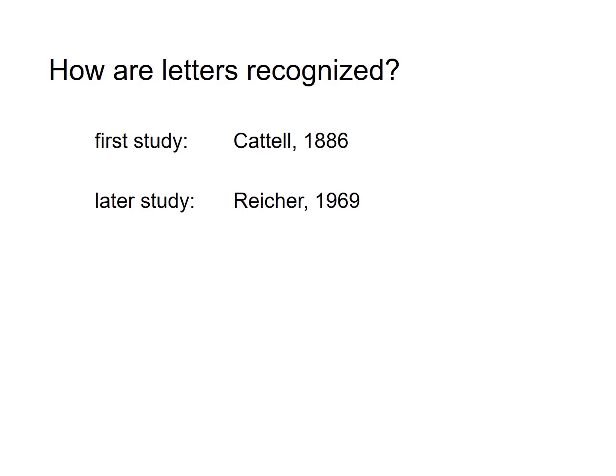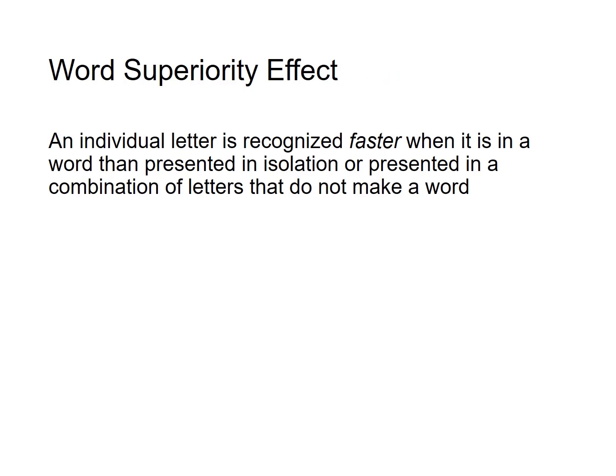Research on how letters are recognized visually is one of the examples of research that was started before 1910, then largely ignored during the time of the behaviorists, and then rediscovered after the cognitive revolution. Their research showed that individual letters are recognized faster when they're embedded in words than when they're presented in isolation by themselves, or presented in a combination of letters that do not make a word.